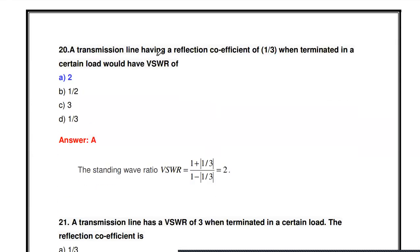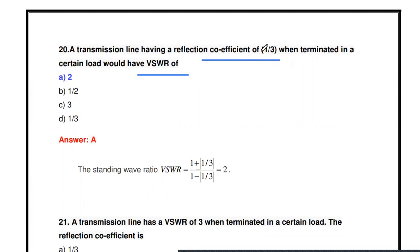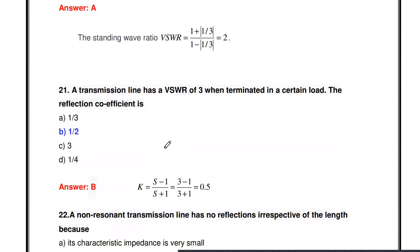A transmission line with a reflection coefficient of 1/3 when terminated in a certain load would have a VSWR of — what? The VSWR formula is (1 + |k|) / (1 − |k|) = (1 + 1/3) / (1 − 1/3) = (4/3) / (2/3) = 2. So the VSWR is 2.